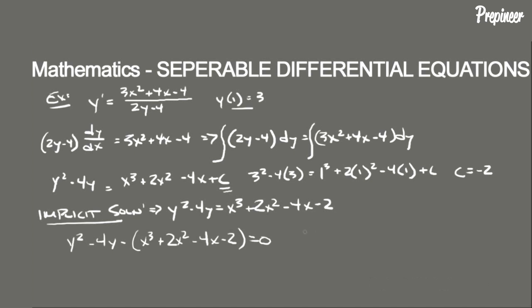We recognize this is a quadratic in y, so we can use the quadratic formula to solve it. Unlike typical quadratics, some of the constants here will actually involve x's — specifically the constant term. We define a equals 1, b equals negative 4, and c equals negative (x cubed plus 2x squared minus 4x minus 2).